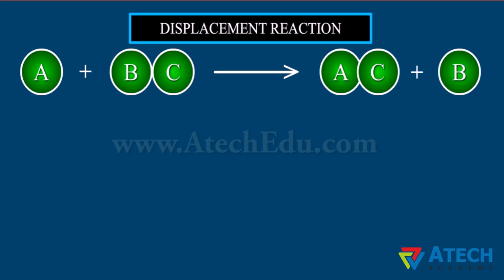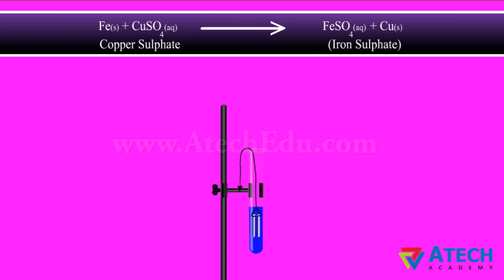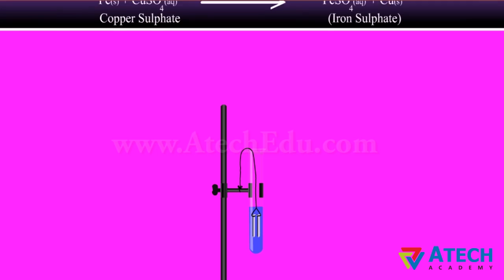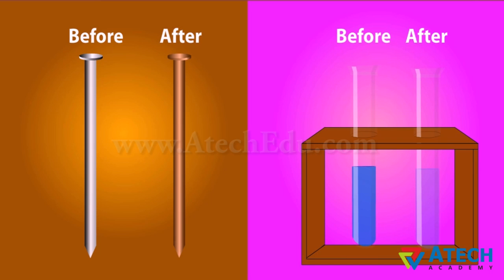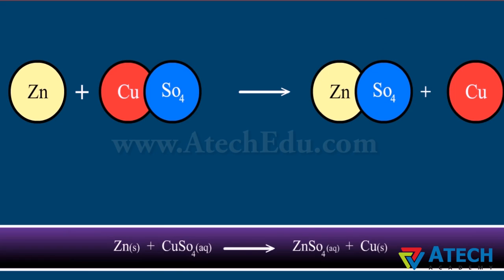When an element displaces another element from its compound, a displacement reaction occurs. The general form is: A displaces B in compound BC to form compound AC. For example, when iron nails are dipped in copper sulfate solution, the iron nails become brownish in color and the blue color of the copper sulfate solution fades, because iron has displaced copper. Another example is zinc displacing copper from copper sulfate solution to form zinc sulfate.